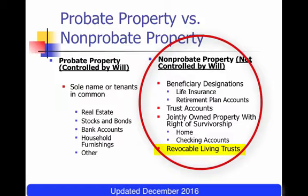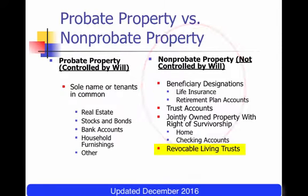The person who receives the death benefit receives it as a result of the provisions in the contract that relate to that type of property. Revocable living trusts are that type of thing as well.